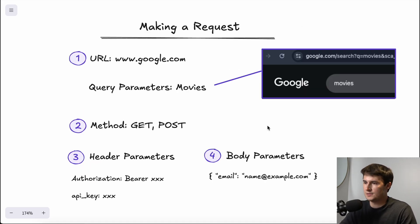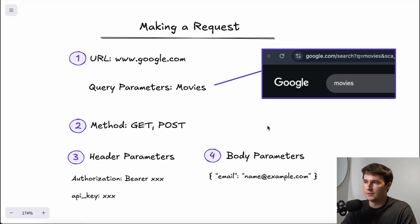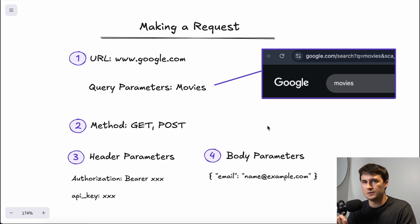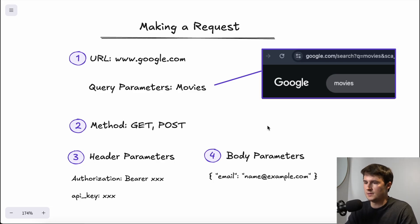To break down the four components — the URL: if we're searching up movies on Google, the URL would be www.google.com. Our query parameter, added to the end of the URL, would be something like ?q=movies. Query parameters are used to filter or modify the data you request from an API. They are added to the end of the URL in the format ?key=value. So here, Q is the query parameter with the value being movies.